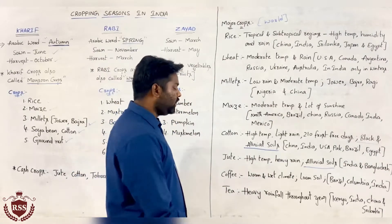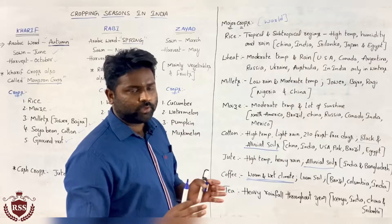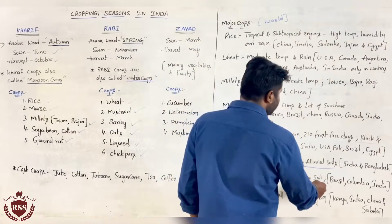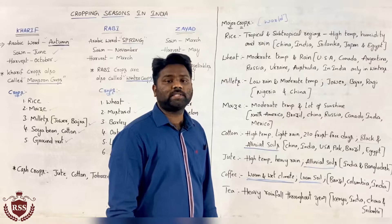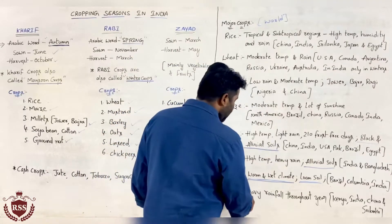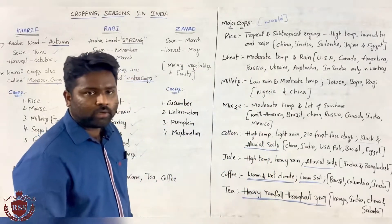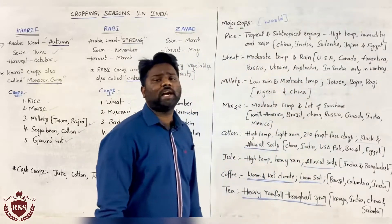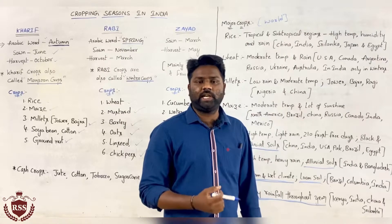For coffee, we need a warm and wet climate — both warm and wet, moderate climates. The soil needed is loam soil, in which coffee grows abundantly. Brazil, Colombia, and India are the countries majorly growing coffee. For tea, we need heavy rainfall throughout the year. Kenya, India, China, and Sri Lanka are the countries majorly growing tea.